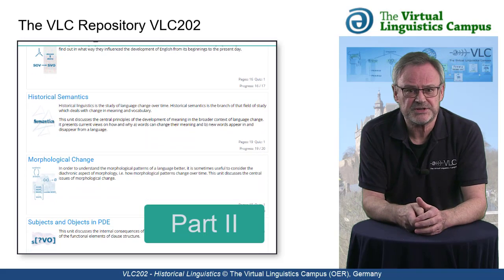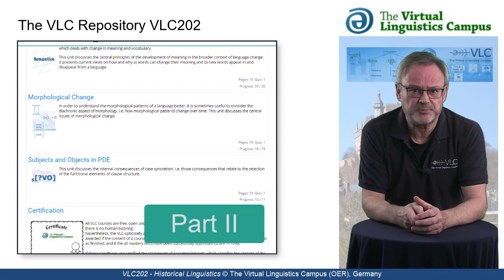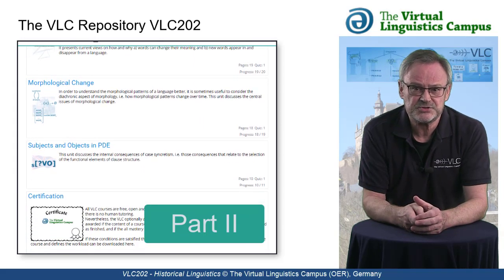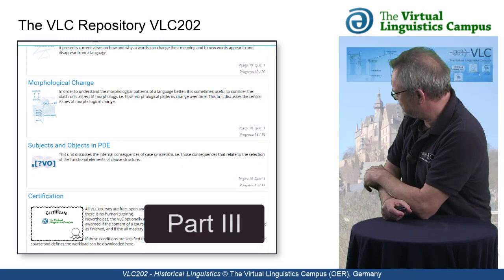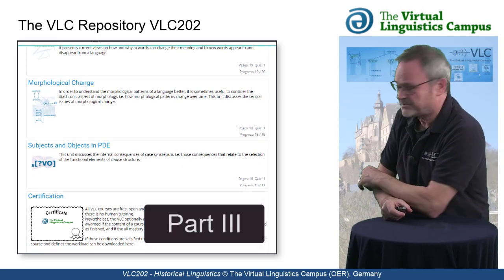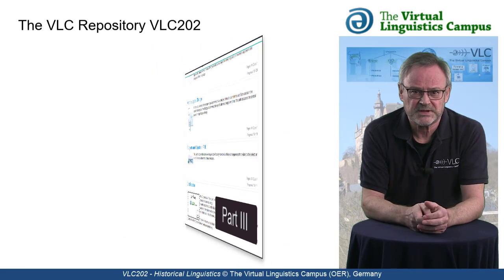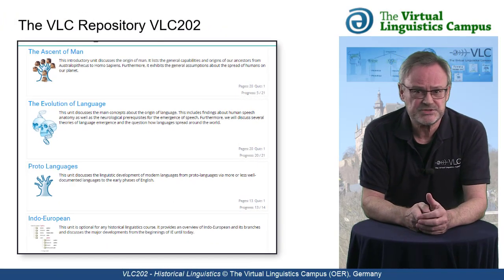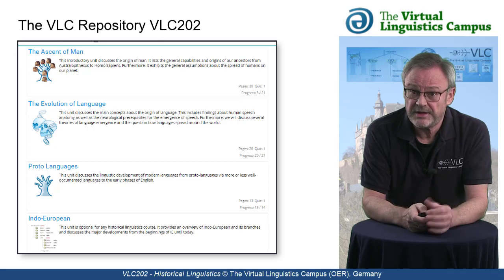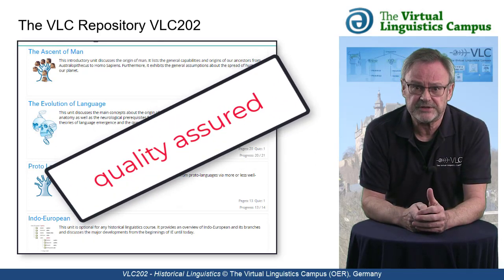How these changes influence the central grammatical options of a language is illustrated on the basis of the last unit, presenting English subject and object selection. This list of units is growing, updated and quality assured on a regular basis.